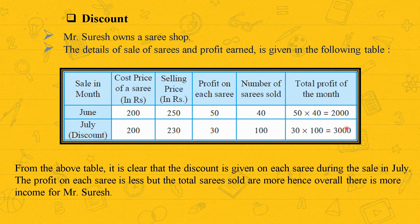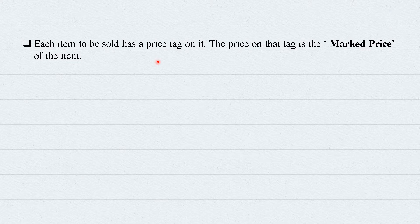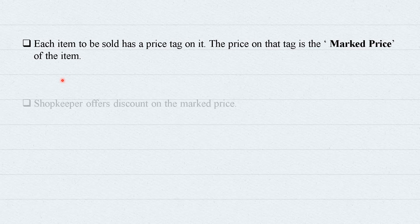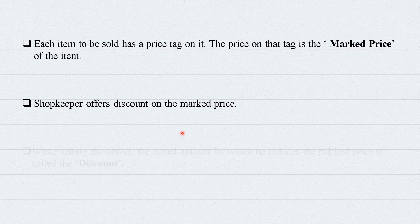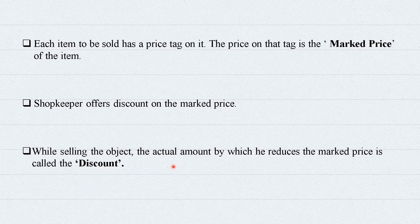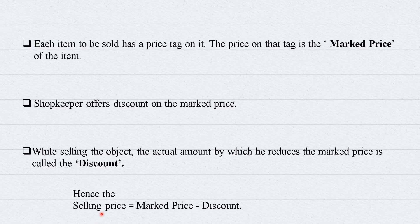Each item sold in a shop has a price tag on it. The price on that tag is called the marked price. The shopkeeper offers a discount on the marked price while selling the item. The actual amount by which the marked price is reduced is called the discount. Hence, selling price = marked price − discount.